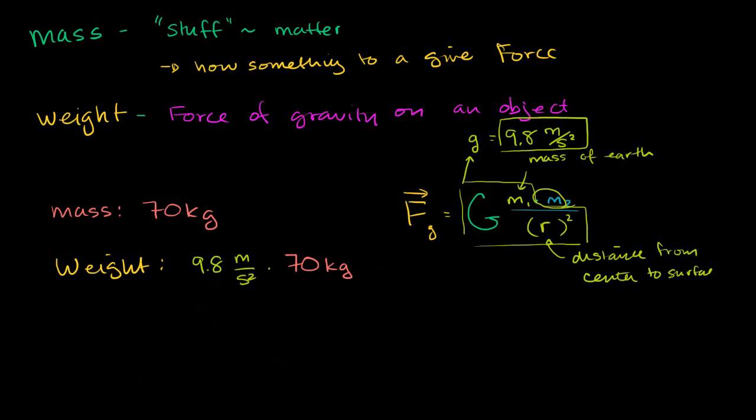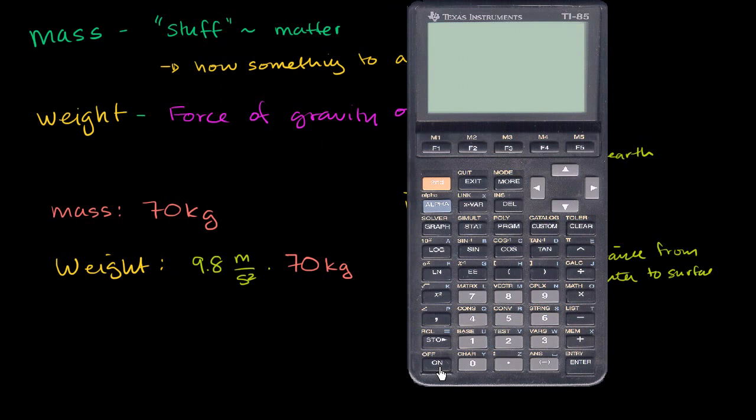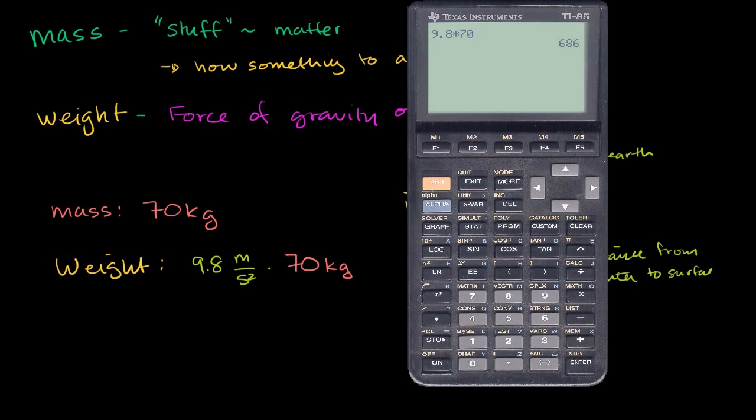And so this is going to be, let me just get my calculator out and do the math. So we have 9.8 times 70 kilograms. So we have 686. So this gives me 686. And then the units are kilogram meters per second squared, which are the same thing as a newton. So my weight, and you'll never hear people say this, but my weight on the surface of the Earth is 686 newtons.